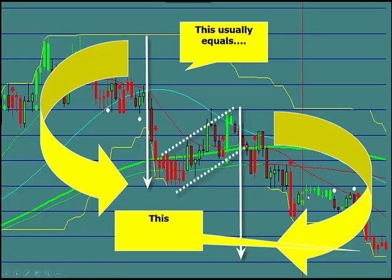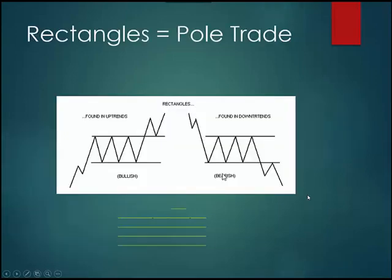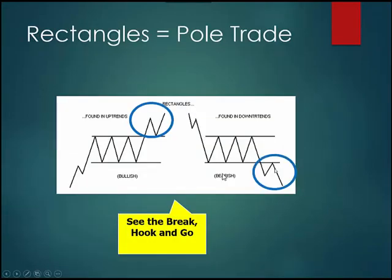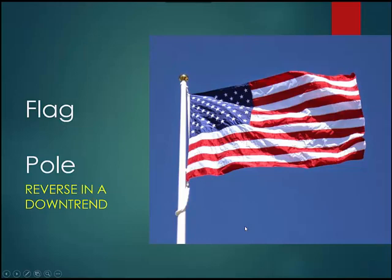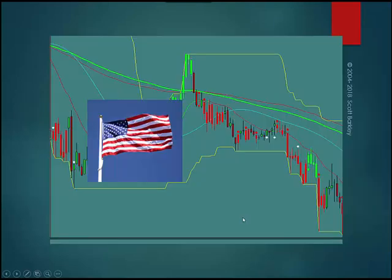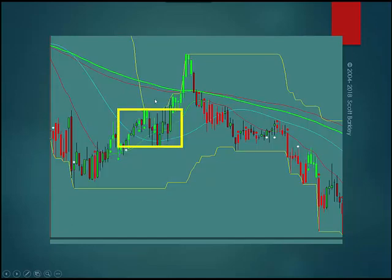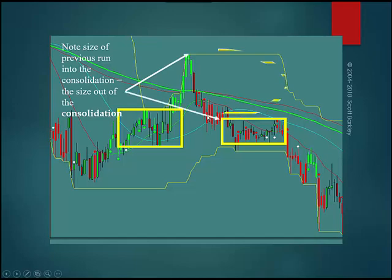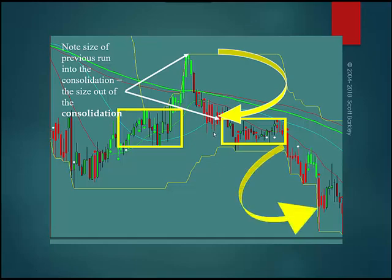Now that you know that, the pole trade is the first trade to actually learn. It's based on the rectangular pattern. Here's the rectangular pole trade. I want you to notice that part of the break of the flag is statistically always a break, hook, and go. This is the flag part and this is the pole part. The pole trade is called that because we measure the pole to find the target. So here's the flag — sideways movement. Whatever you did going into that is what you're going to do coming out. Here's one to the downside: you measure from the top to the bottom of the flag, from the top of the movement. Whatever that distance is, is what it's going to do down here. Most traders will get five pips. The trader who's clued into the pole trade will get 40, 50, 80, 100 — whatever it is going into that flag.